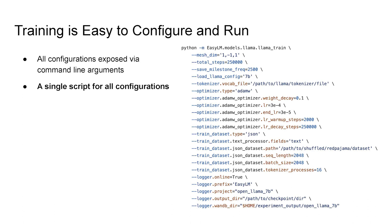Running EasyLM is also very simple. All training configurations are exposed via command line arguments, meaning you only need to write one single script for all configurations. You don't have to deal with complicated levels of YAML configuration files — just one single script, and you can launch your experiment and run.